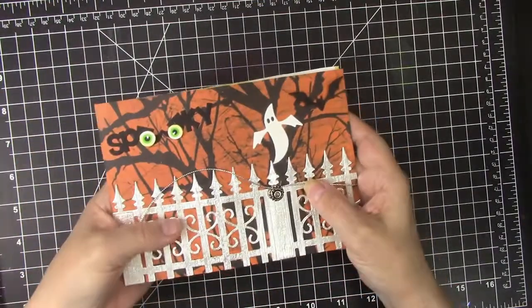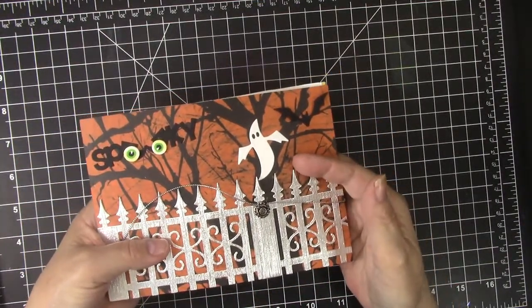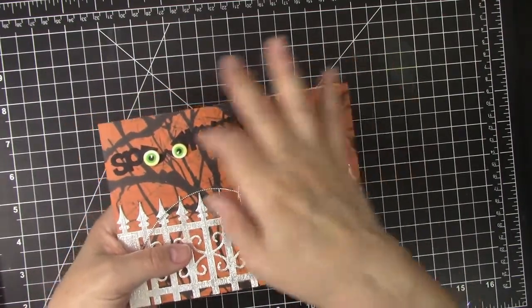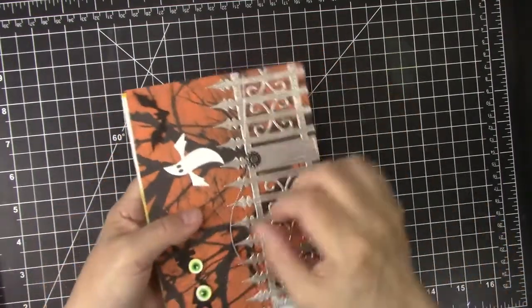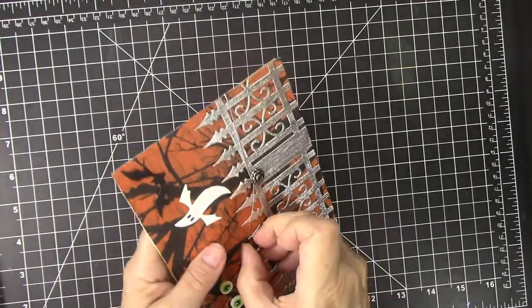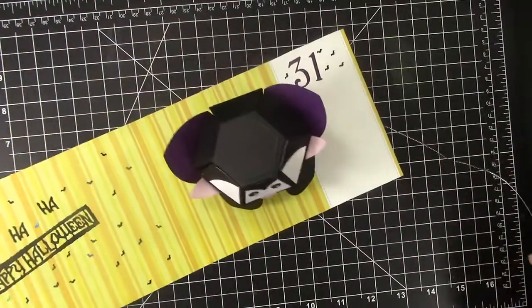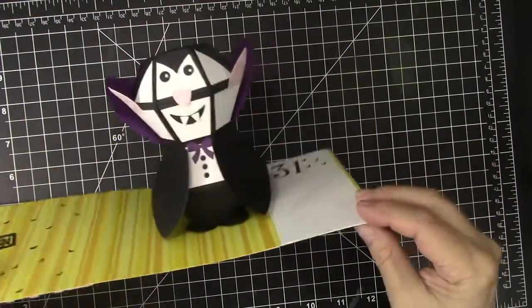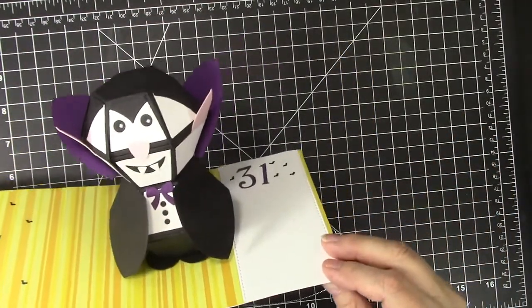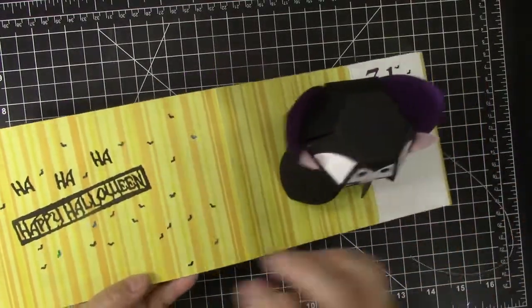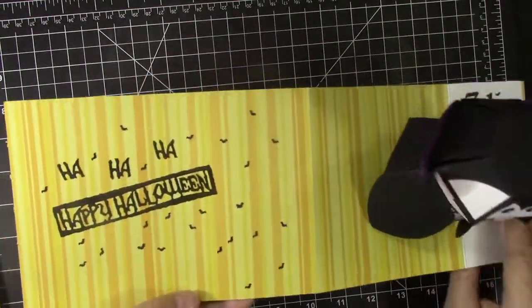Now I used that same iron fence on the front of this card, and I just used it flat and added some spooky Halloween, and then when this card is opened, look what pops up. It is Count Dracula. And he is saying, ha, ha, ha, happy Halloween.